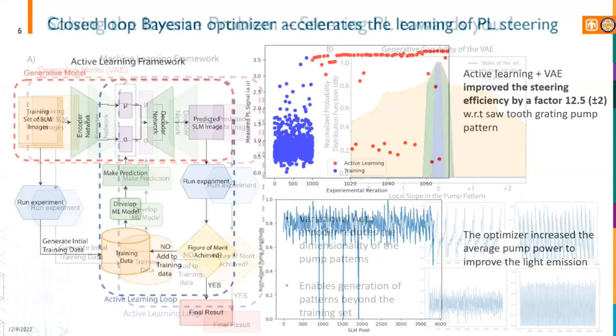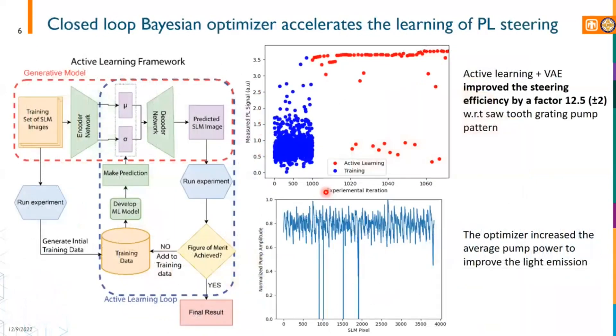We leverage the Bayesian optimization of the active learning to improve the efficiency of the steering by a factor of 12 with respect to a sawtooth grating for any given angle.